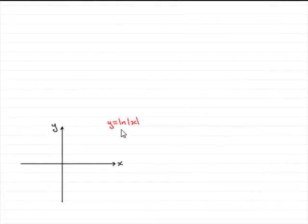So in this question we're asked to sketch the graph y equals the natural log of the mod of x. So how do we do this?